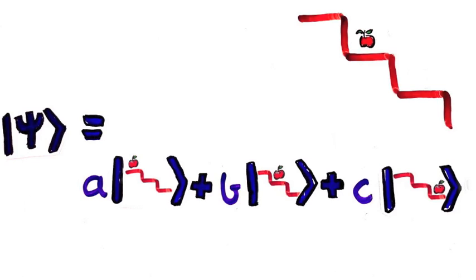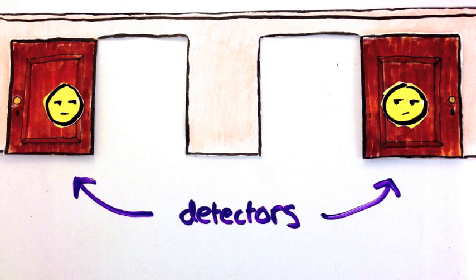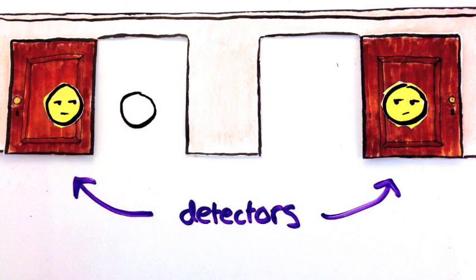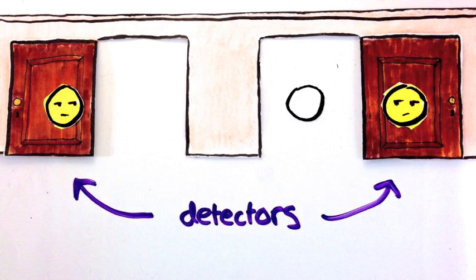For example, in the double slit experiment, if we put detectors behind each door, we'd see each particle go through just one slit. But which one?